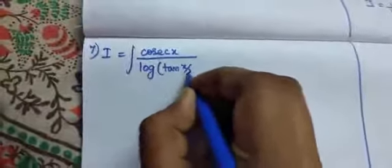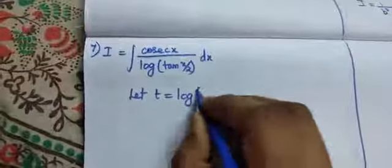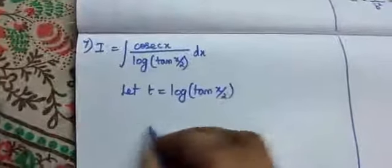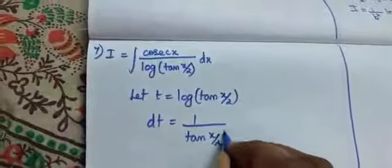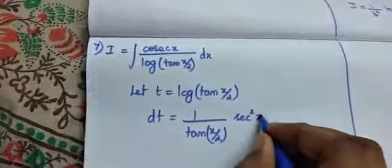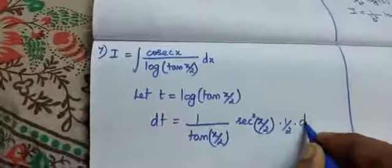Now come to our 7th problem. Our 7th problem is I is equal to integral of cosecant x divided by log of tan x by 2, into dx. Let t be equal to log of tan x by 2. Then dt is equal to 1 by tan x by 2, next tan differentiation is sec squared x by 2, and x by 2 differentiation gives into 1 by 2 into dx.